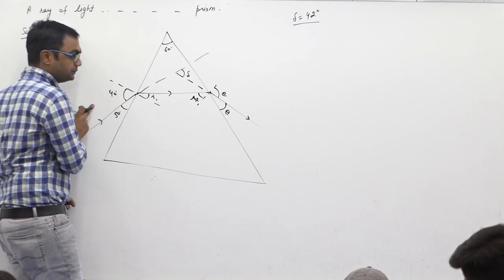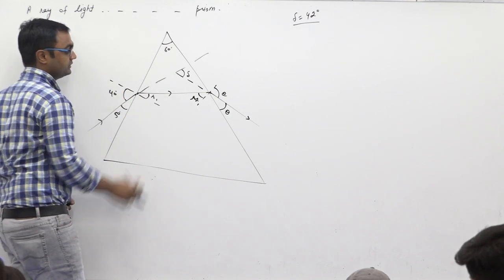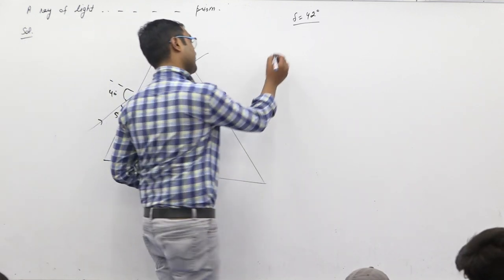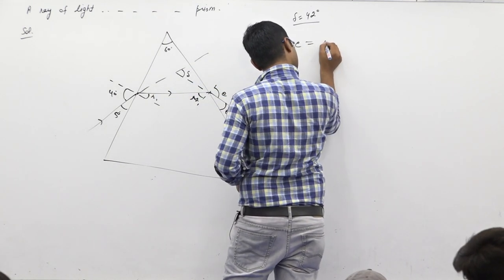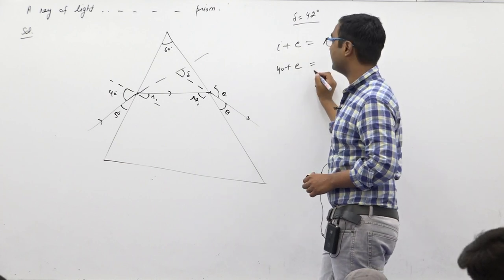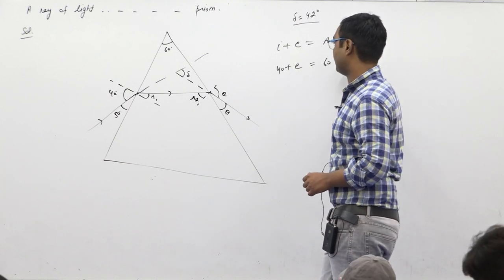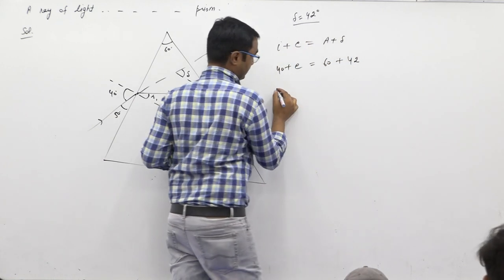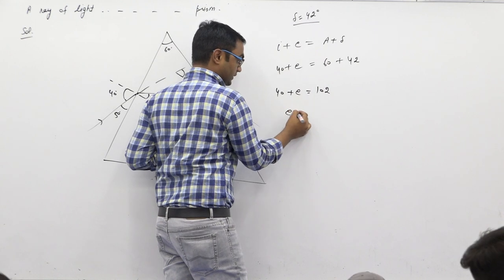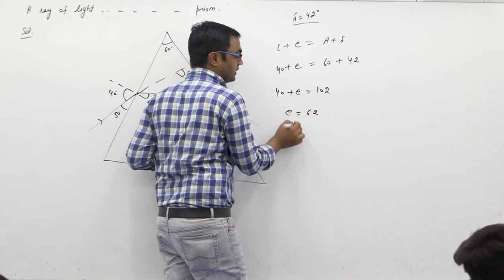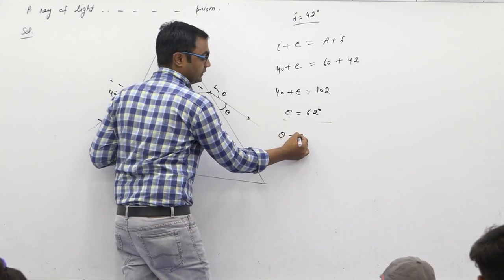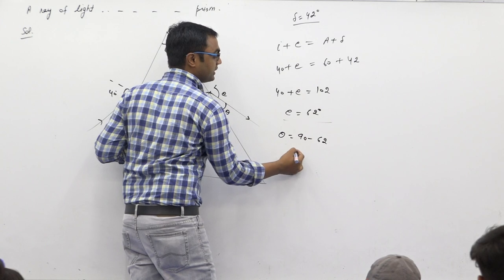The angle of incidence plus the angle of emergence equals the prism angle plus the deviation: I plus E equals A plus delta. I is 40, A is 60 plus delta 42. So 40 plus E equals 102. What is the E value? 62. So E is the angle of emergence. We need to subtract this from 90. 90 minus 62, how much is this?